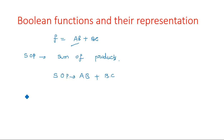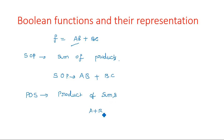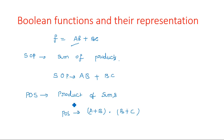Another form of representation is POS — Product of Sums. Here, we first perform the sum operations: A plus B is one sum and B plus C is another sum. Later, we perform the product between these two using the AND operation. This gives us the product of sums. This is the example of POS.